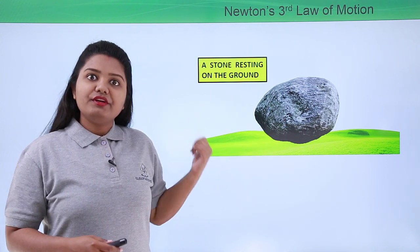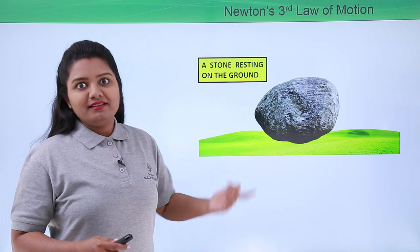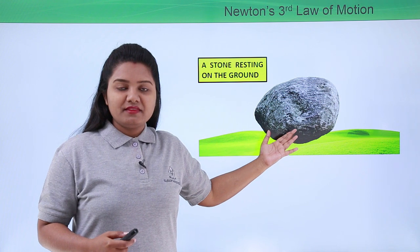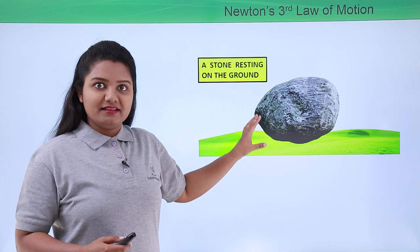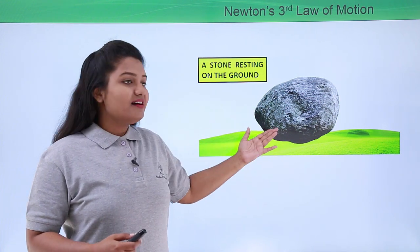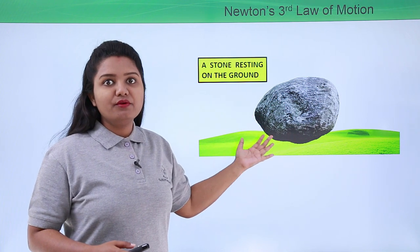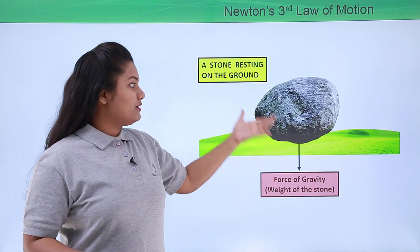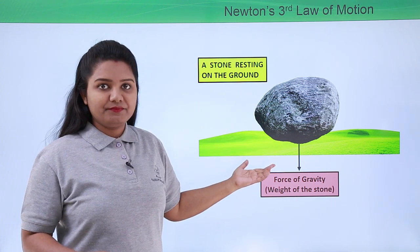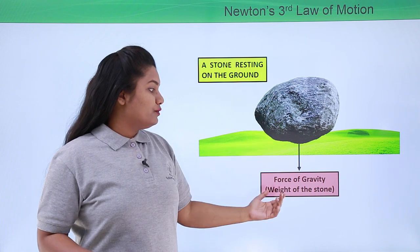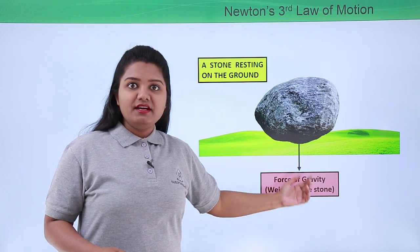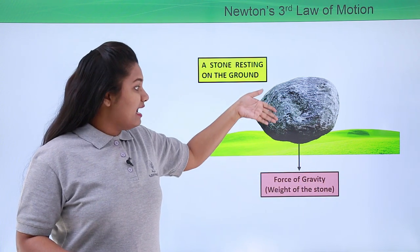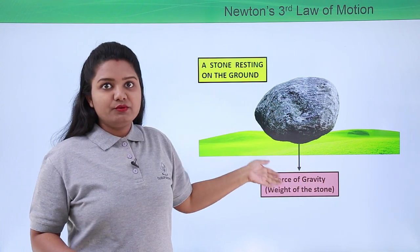Now we know what the forces acting on the stone are. The first and foremost one is due to the mass of this stone — a force that the stone exerts onto the ground because of the mass it possesses. That force is what we call the force of gravity, with which it is attracted towards the earth. This force is called the weight of this stone.